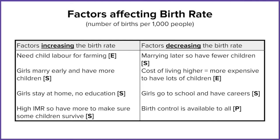Factors for a decreasing birth rate tend to apply to HICs. A lot of people are now focusing on their careers — women can get an education and go on to have a career, so their childbearing period is shorter because they're marrying later or choosing to have children later. The cost of living is also significantly higher in HICs, with higher land values particularly in cities, so having fewer children means retaining more income.